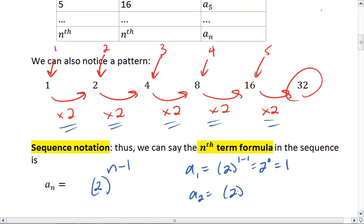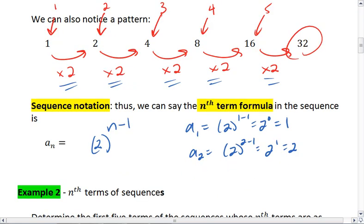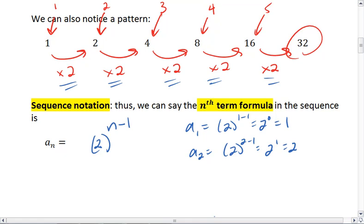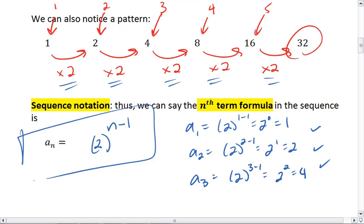a sub 2 is 2 to the 2 minus 1 equals 2 to the 1 equals 2. That checks out. a sub 3 is 2 to the 3 minus 1, 2 squared equals 4. And this will continue to work for all of our terms. So this is the correct nth term formula.